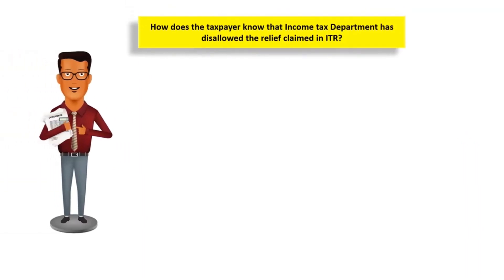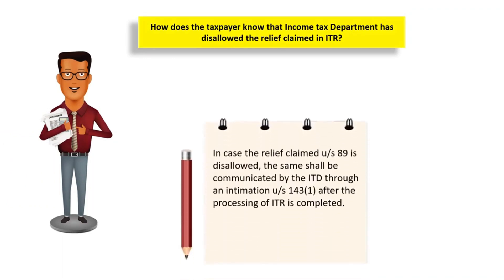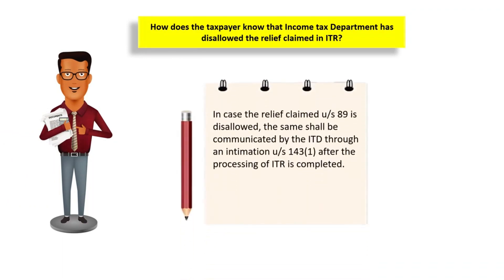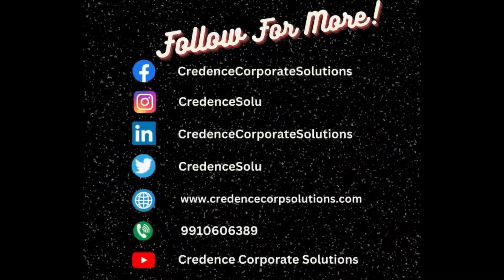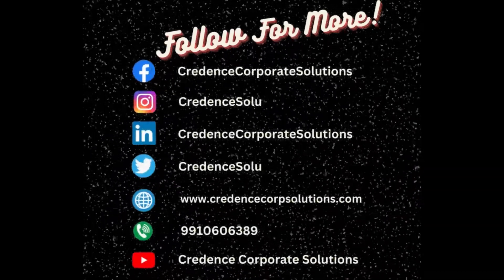Post e-verification, Form 10E will be submitted. The acknowledgement number will be generated and communicated on the registered email ID and mobile number. Taxpayers might also want to know how they would come to know if the Income Tax Department has disallowed the relief claimed in the income tax return. In case the relief claimed under Section 89 is disallowed, the same shall be communicated by the Income Tax Department through an intimation under Section 143(1) after the processing of ITR is complete. Filing of Form 10E is very easy. To know more, you may visit our website.